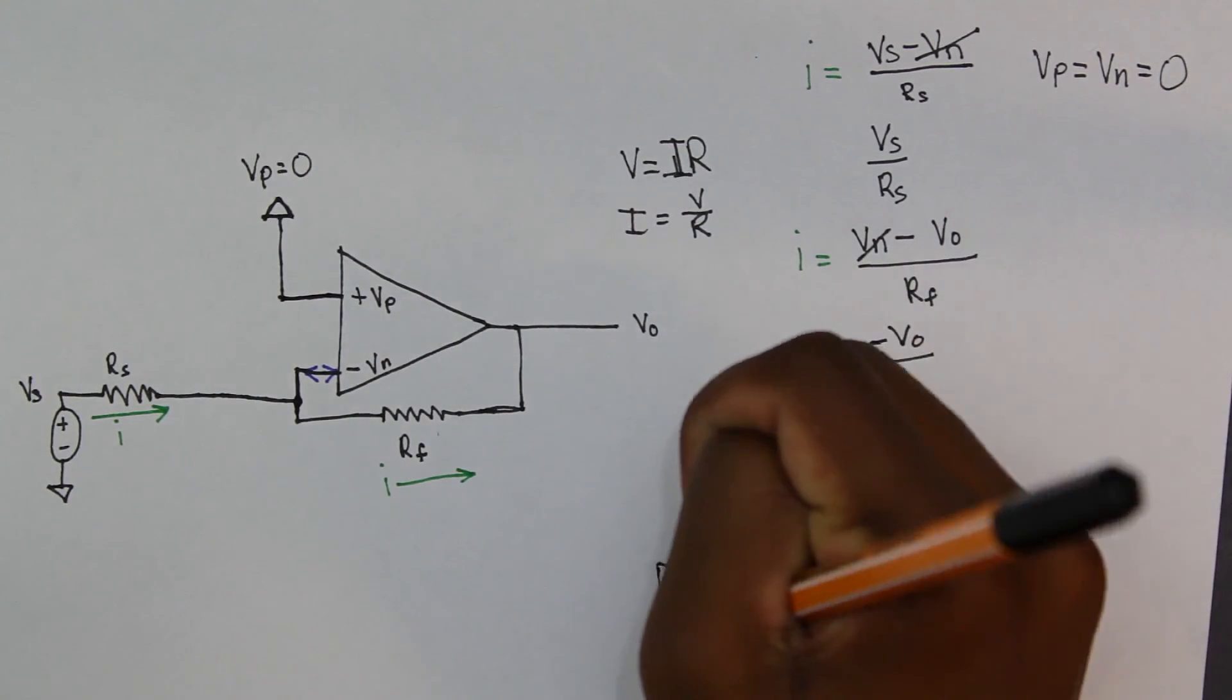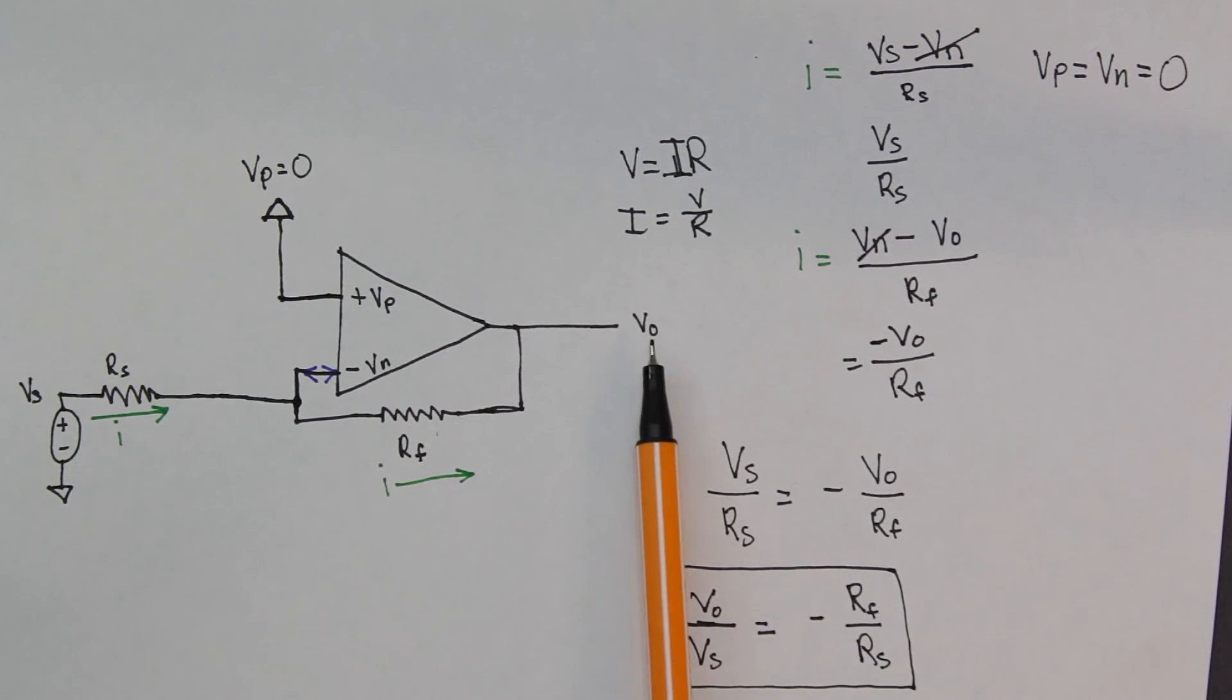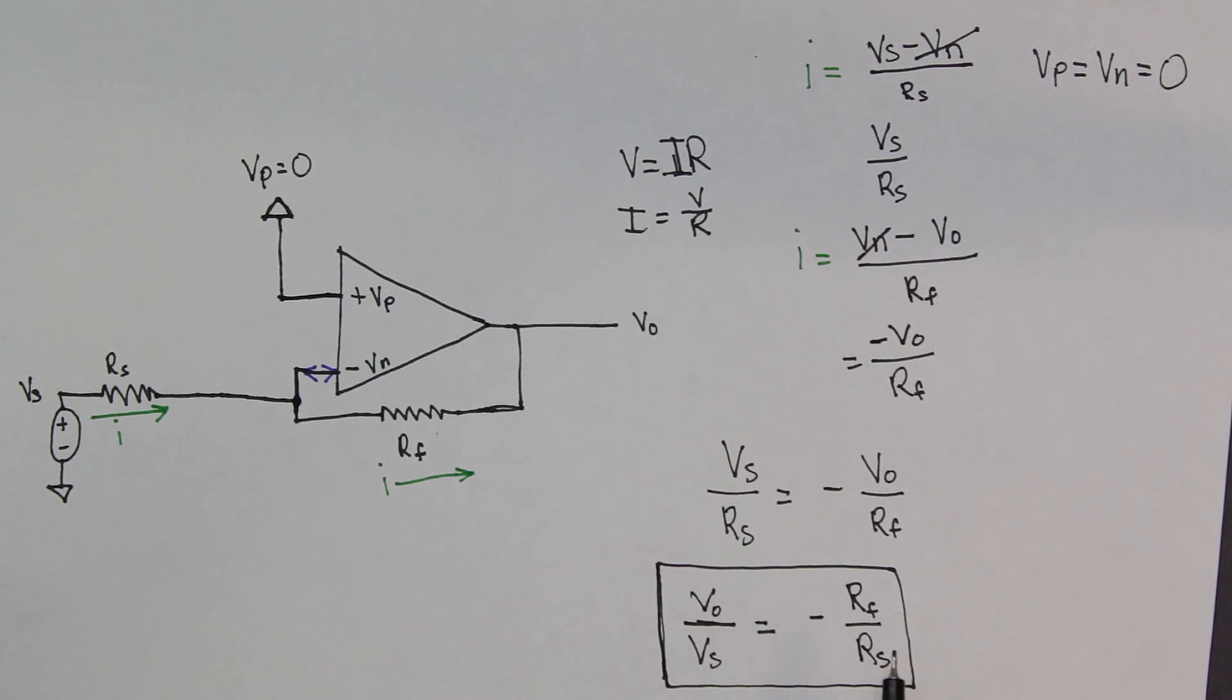Now this means that Vout over Vs, or the relationship between Vout and Vs, or you could also call this the gain, is equal to negative Rf over Rs. So this means that we can change the gain of an amplifier merely by changing two resistors. We could make it 10, or 2, or 100, just by changing two resistor values. And that's what makes the op-amp so ideal.